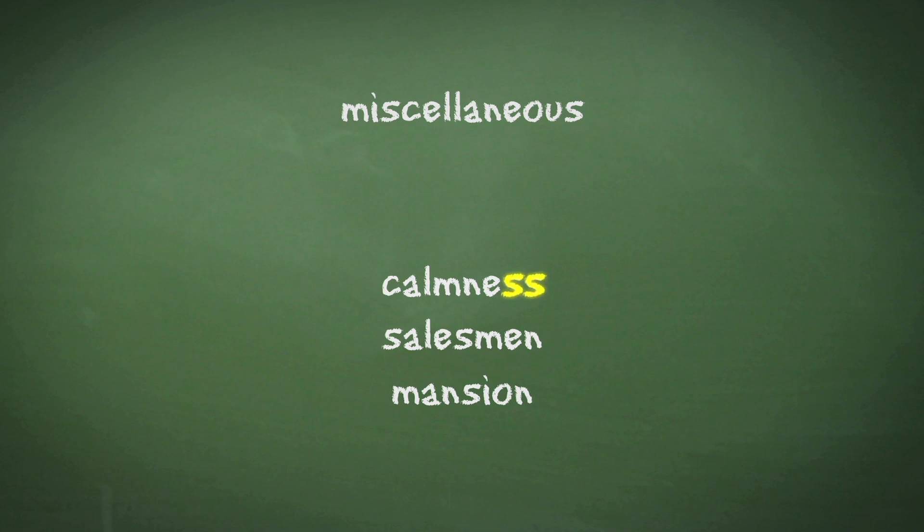Whenever you see a word that has two of the same letter in it, alarm bells should ring. Examiners often try to trick you by using double letters in the answer that only appear once in the question. In this case, calmness has two S's, so we need to make sure that S appears twice in the question.